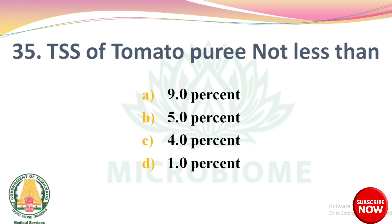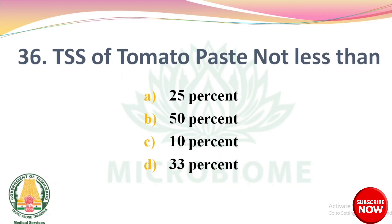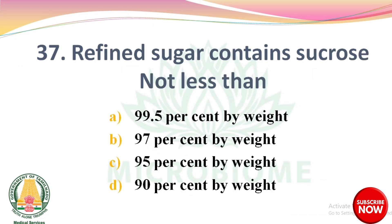Question 34: TSS of tomato puree not less than — options: 9%, 5%, 4%, 1%. The right answer: option A, 9%. Question 35: Refined sugar contains sucrose not less than — options: 99.5% by weight, 97% by weight, 95% by weight, 90% by weight. The right answer: option A, 99.5% by weight.